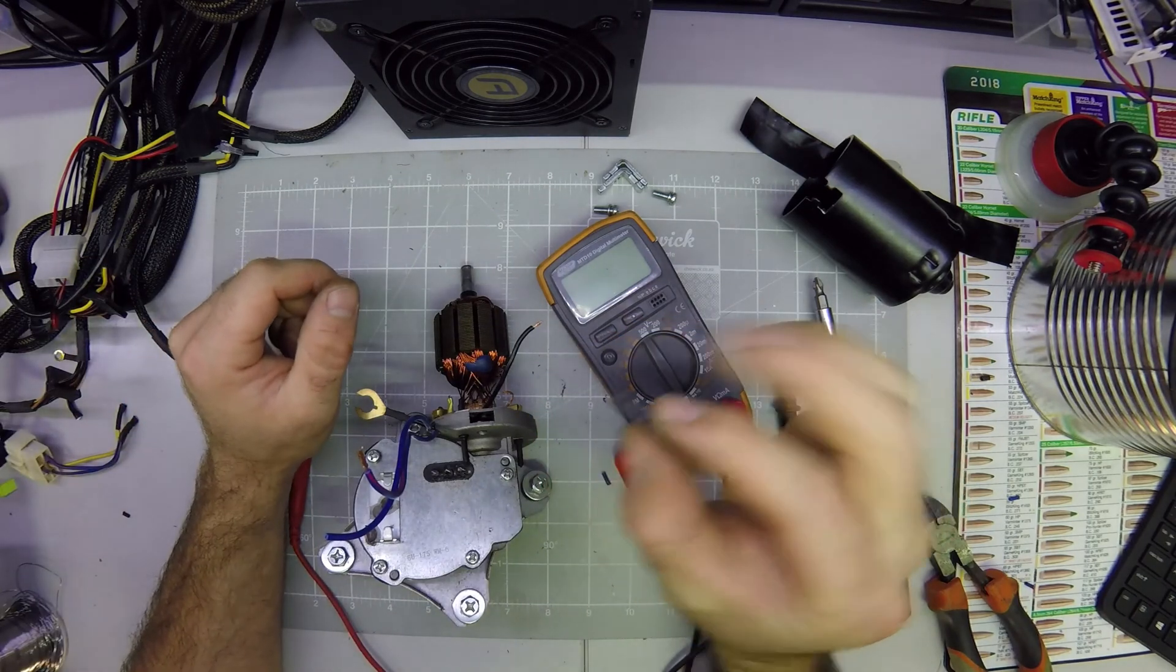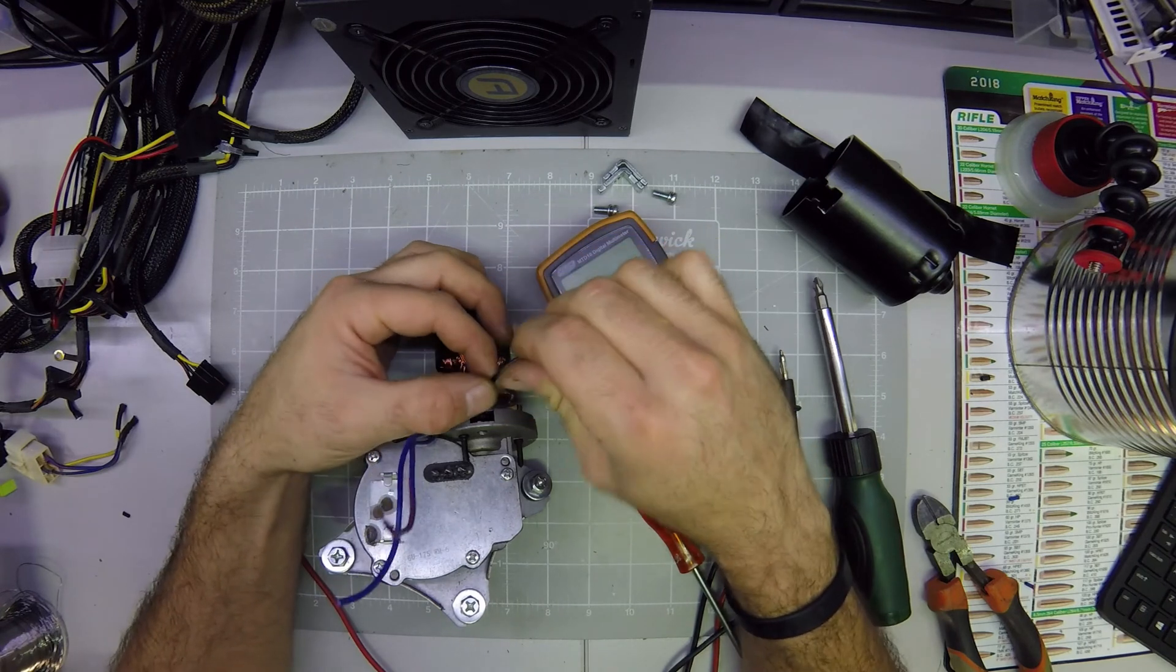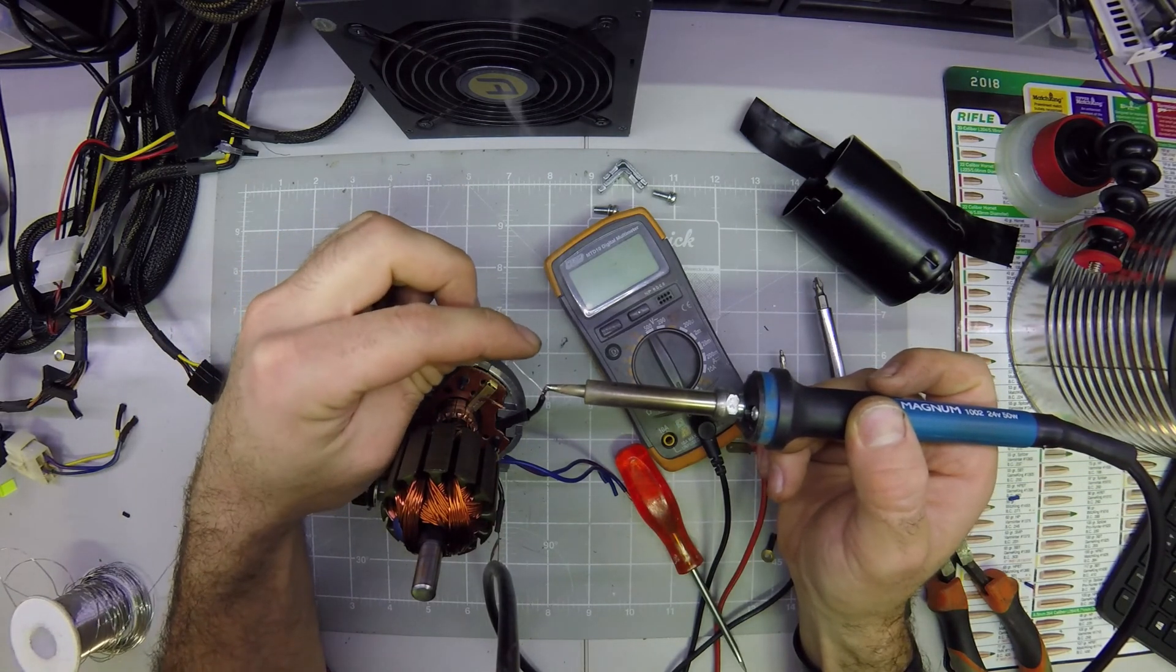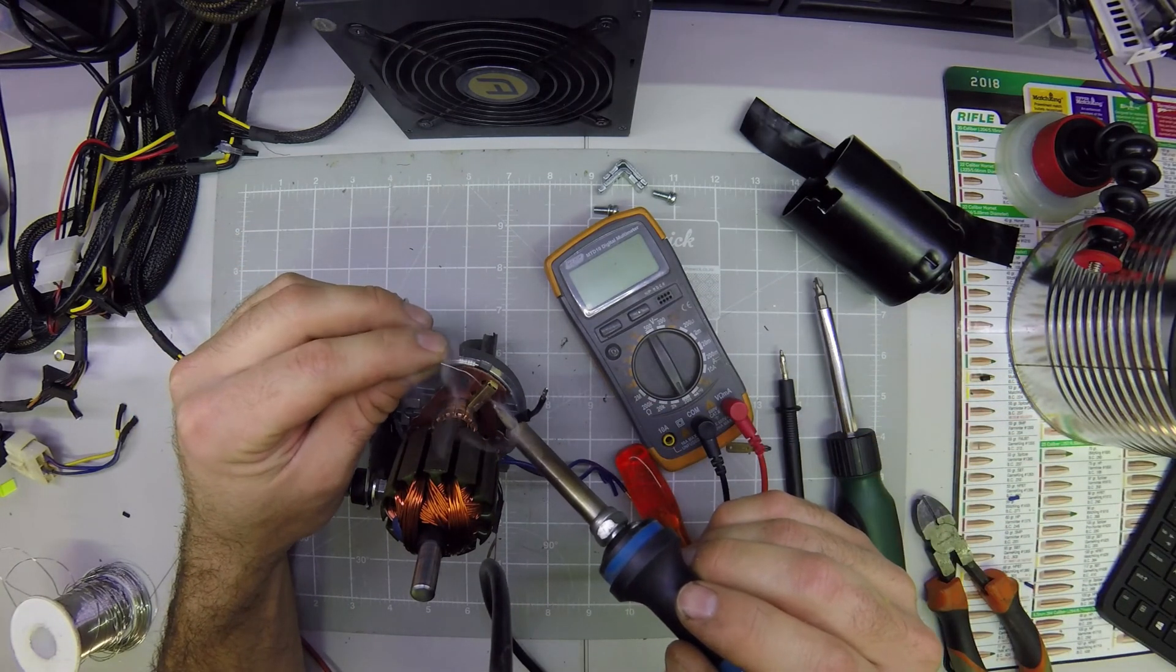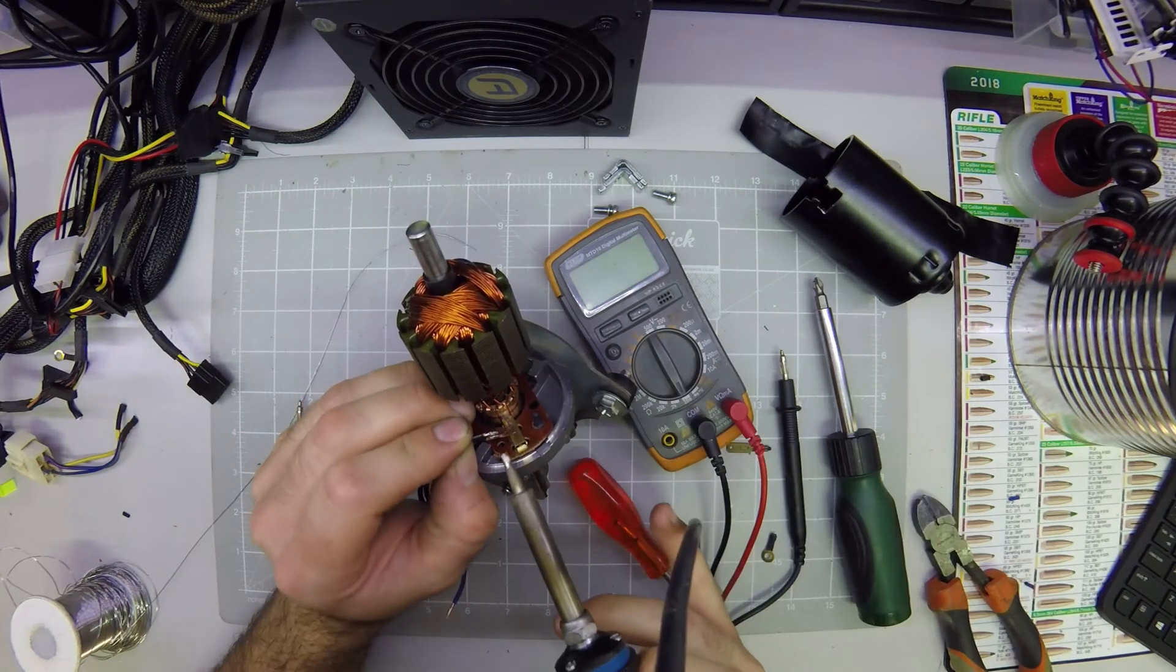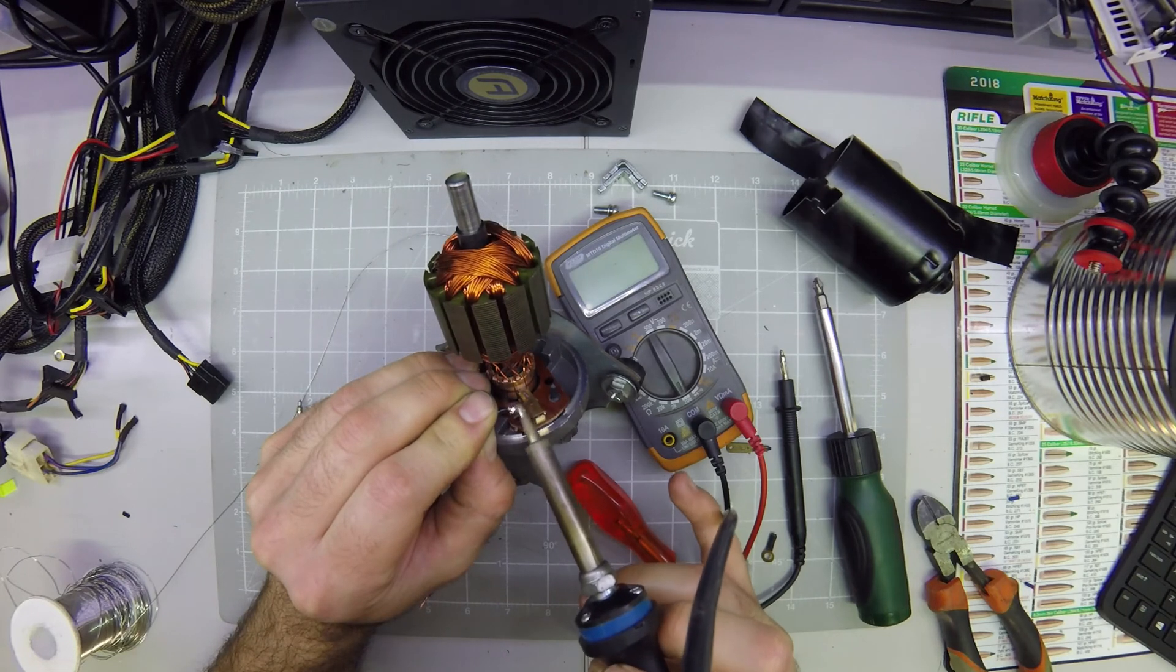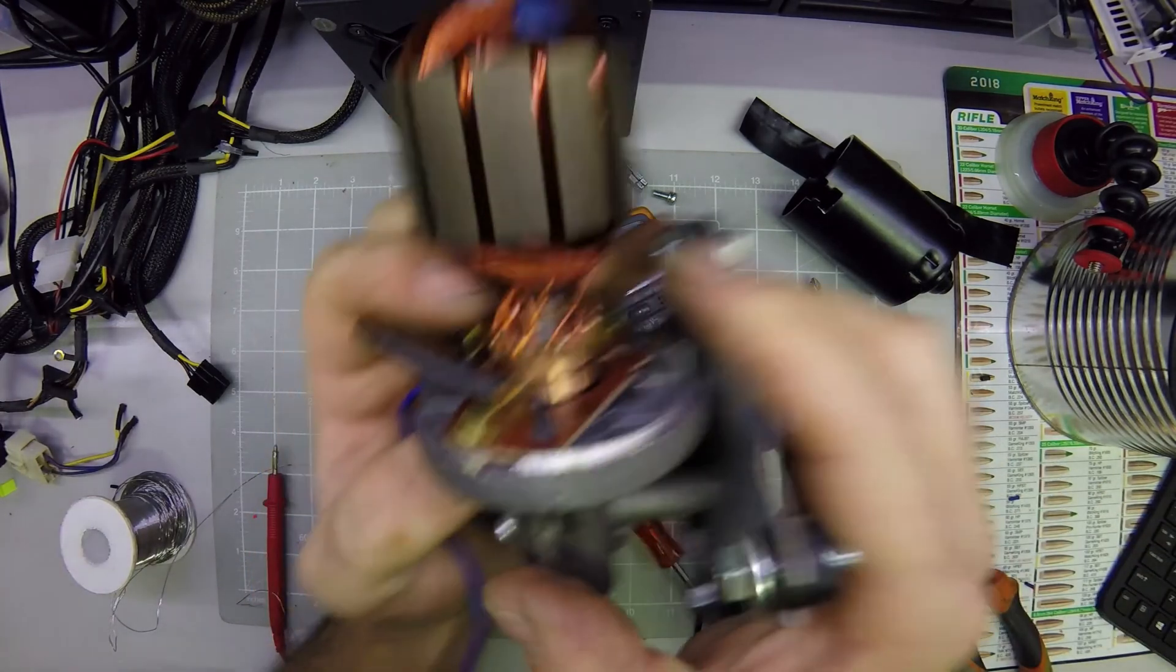We're going to cut a piece of heat shrink. I'm going to slip it over the edge there. Let's solder this. It's pretty tinless. I'm going to do the same for this side.